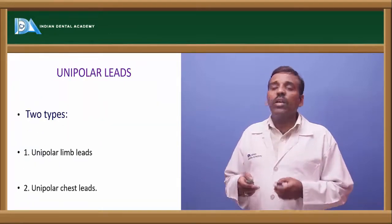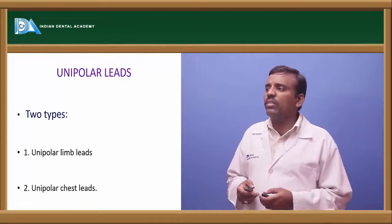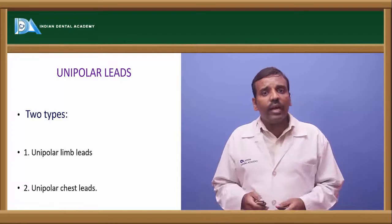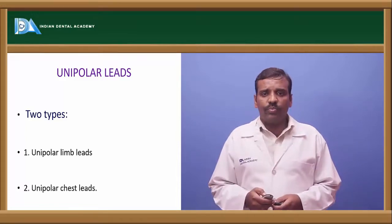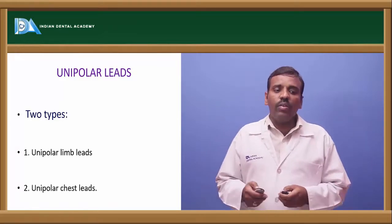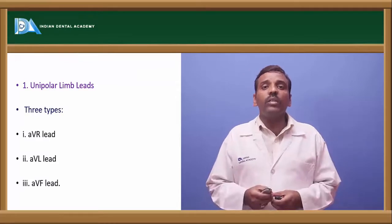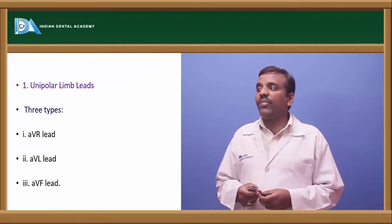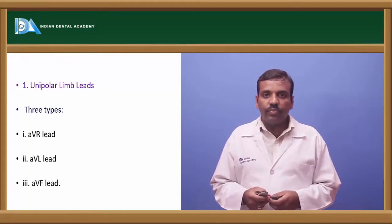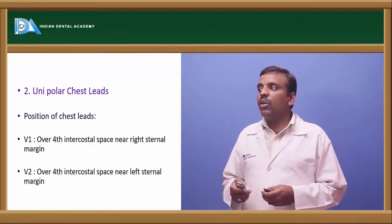Next are the unipolar limbs, which are of two types: unipolar limb leads and unipolar chest leads. Unipolar limb leads are divided into three types: AVR lead, AVL lead, and AVF lead.